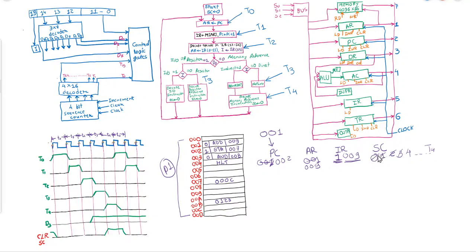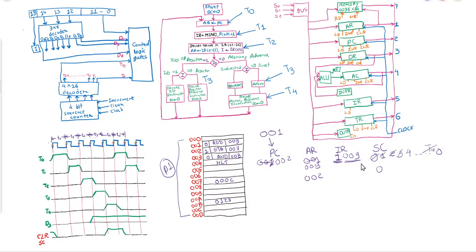Let us assume the instruction is executed and again we set the sequence counter to 0. A new clock cycle begins: PC to AR. What is the new address in PC? It is 002, so it will be loaded into AR as 002. The initial value of the sequence counter is again 0.